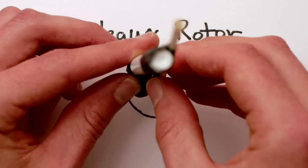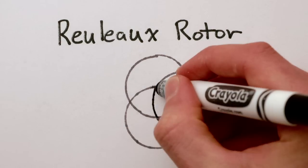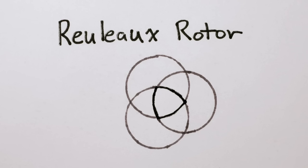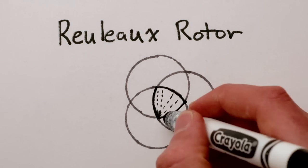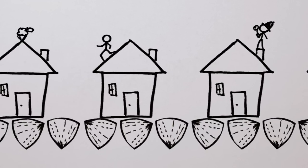The Reuleaux triangle, for example, is made up of segments from three circles intersecting at their centers. So every point on one side is the same distance from the opposite corner, and the rotor rolls around wonderfully.